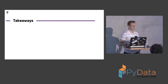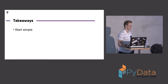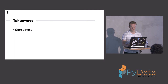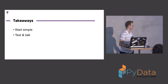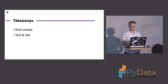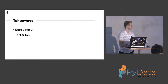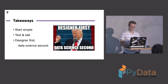The takeaways from this presentation: start simple — do basic tests to find out what methods are actually feasible before spending too much time on them. Test and talk — involve designers in the process of developing such an application so you can get feedback during development. And also, a bit weird at this conference: designer first and data science second.